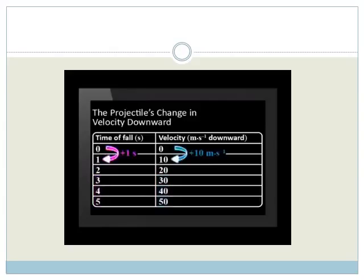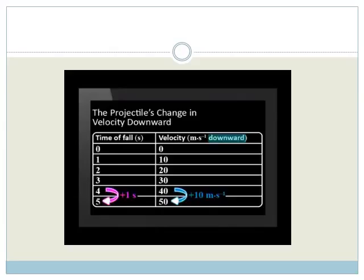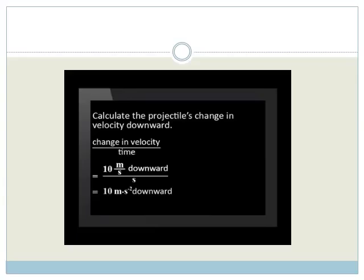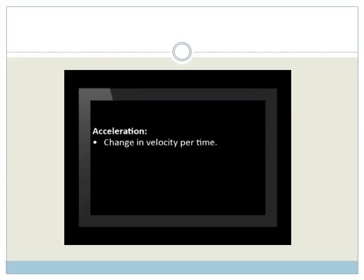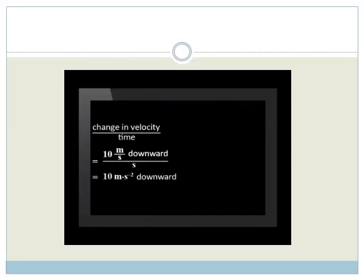All the time it falls, for every second the projectile falls, its velocity gets ten meters per second faster. In other words, the velocity changes at ten meters per second every second. The projectile's velocity is downward for the whole motion, and the velocity increase is also downward. So the projectile's change in velocity per time is ten meters per second downward per second — written as ten meters per second squared downward. Acceleration is the change in velocity per time, also called the rate of change of velocity, and it is a vector quantity, meaning it has both magnitude and direction.